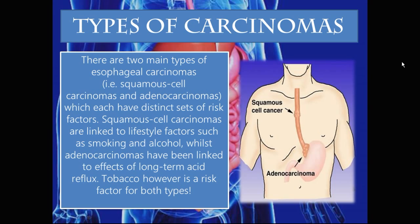On the diagram on the right, you can see the common places where the cancers usually develop. Squamous cell carcinomas usually occur in the esophageal tube in more or less the middle third, while adenocarcinomas usually occur at the gastroesophageal junction.